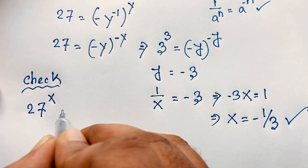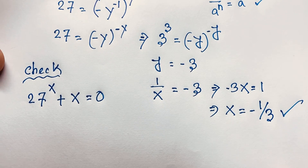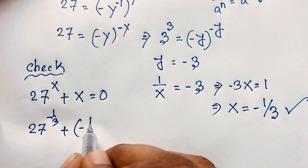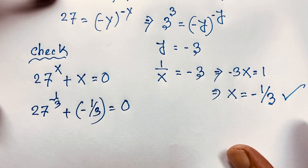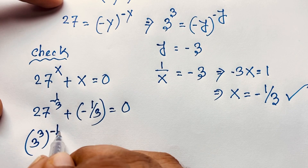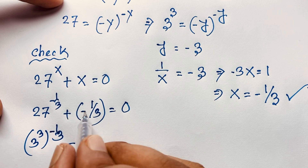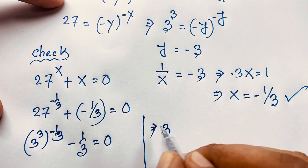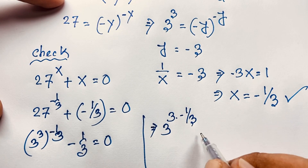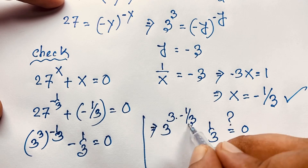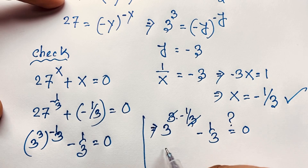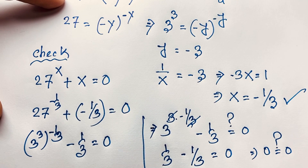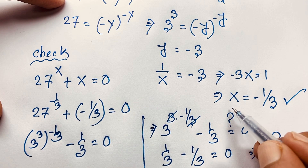Let's verify by substituting x equals negative 1 over 3 back into 27 to the power x plus x equals 0. We get 27 to the power negative 1 over 3, plus negative 1 over 3. Writing 27 as 3 to the power 3, we get (3^3) to the power negative 1 over 3, which equals 3 to the power negative 1, which is 1 over 3. So 1 over 3 minus 1 over 3 equals 0. Left-hand side equals right-hand side, confirming x equals negative 1 over 3.